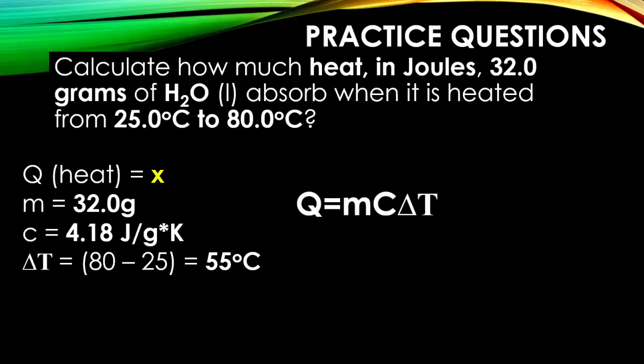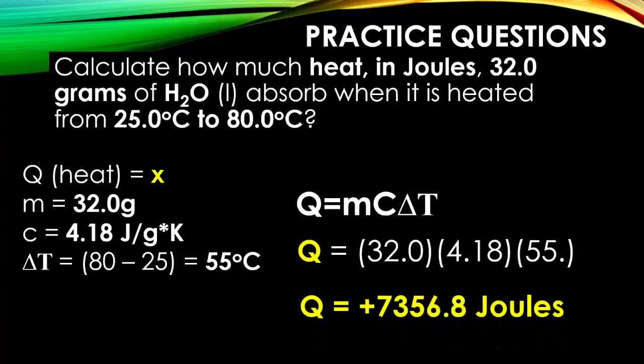When we plug all of our variables into the formula, we'll notice that we're solving for Q again. And when we multiply everything together, we get a positive value. This means that we had to absorb 7,356.8 joules.